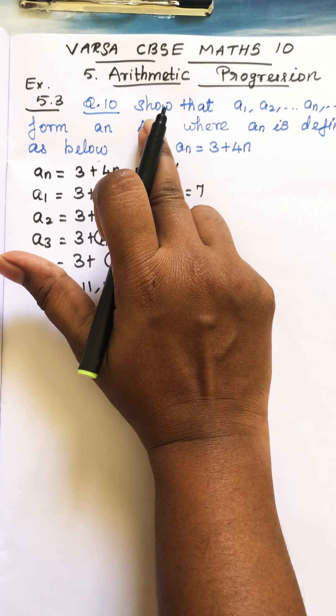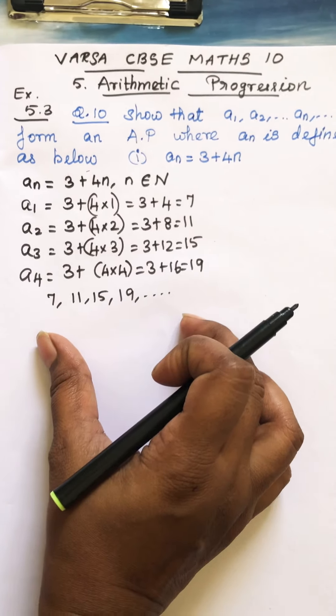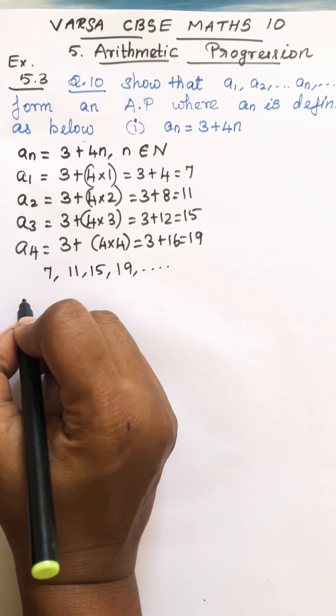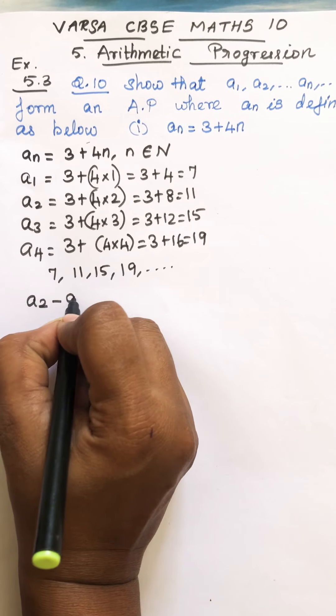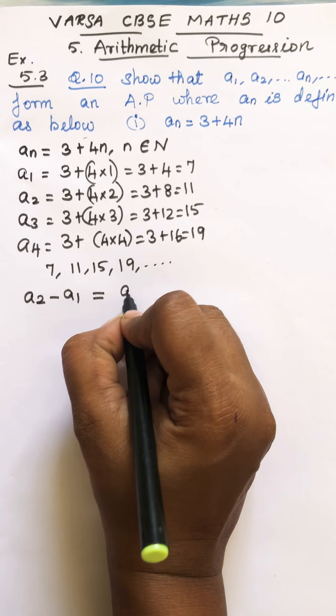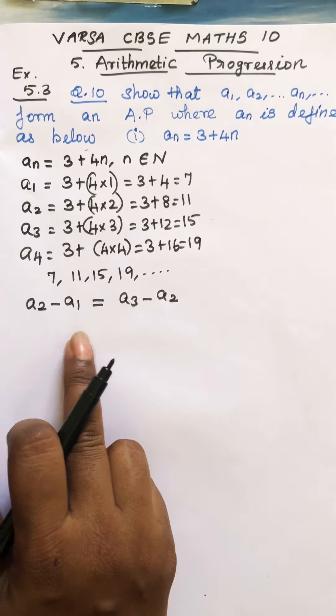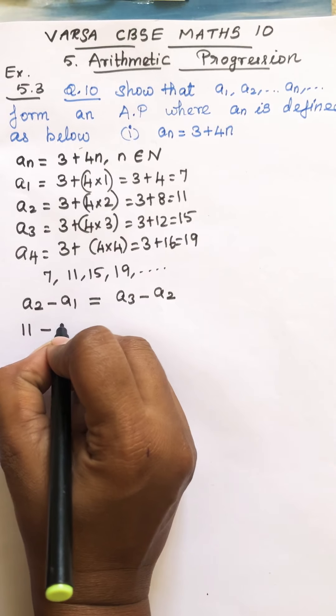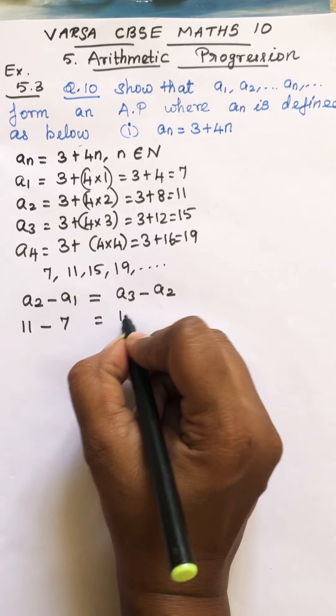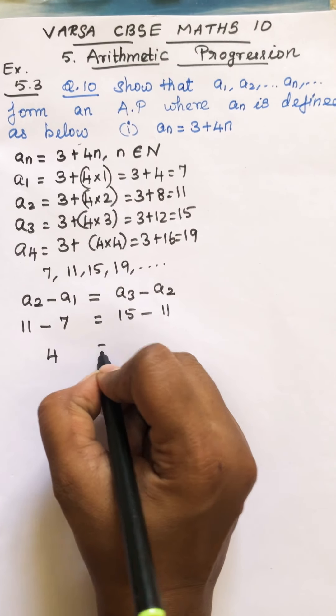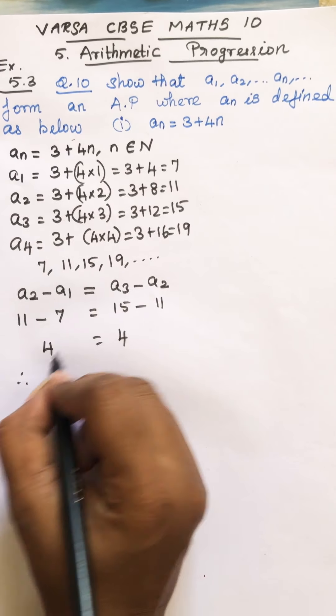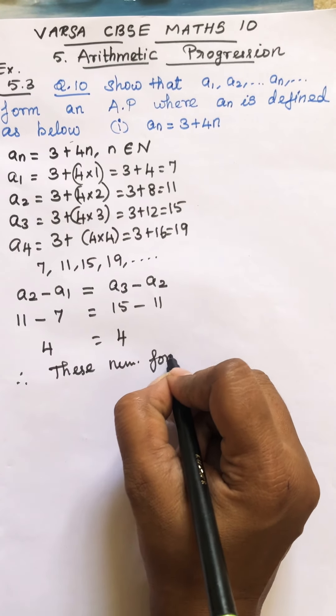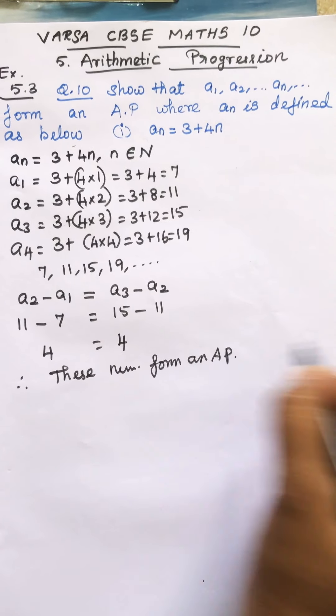Show that this forms an AP. So they want to know, we have to show that this is AP or not. So how will you say that this is AP or not? Take the difference students. A2 minus A1, and you have to verify A3 minus A2. If it is equal, you can say it is an AP. So A2 is 11 minus 7, that's 4. A3 is 15 minus 11, this is 4. So these numbers form an AP.